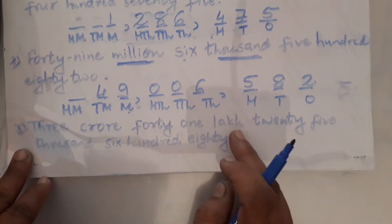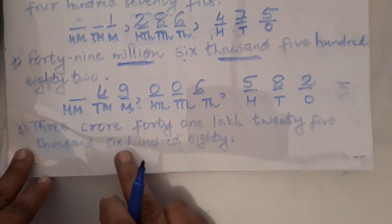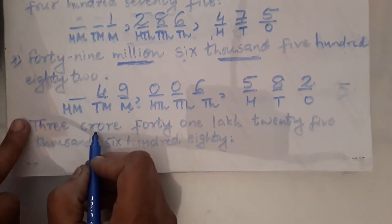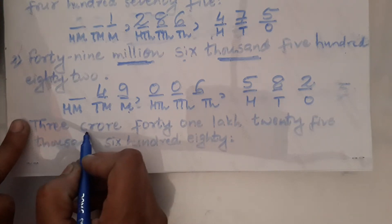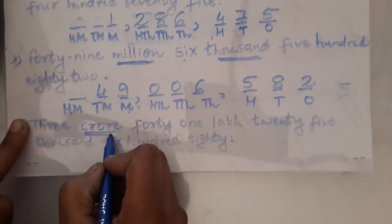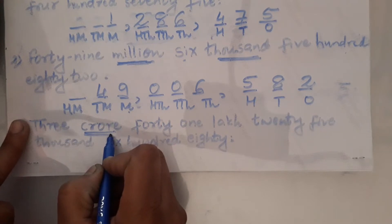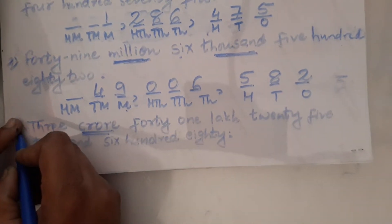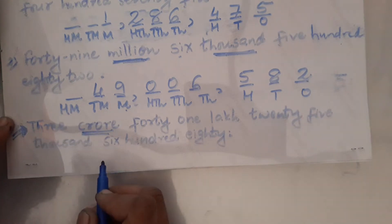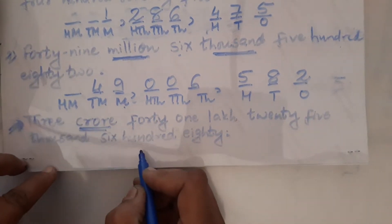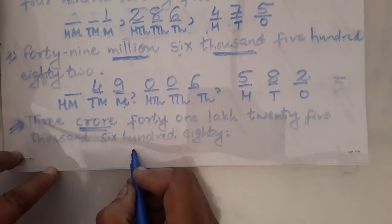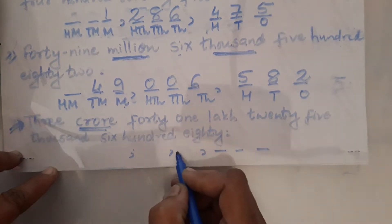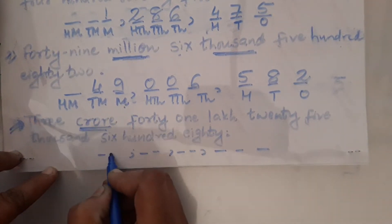3,41,25,680. Do you find million here? No. The word given here is crore, so you have to use the Indian system of numeration. In the Indian system, when you have crore, you write: 3 digits after the last comma, then 2 digits, 2 digits, 2 digits.